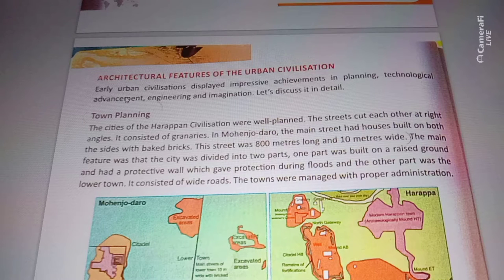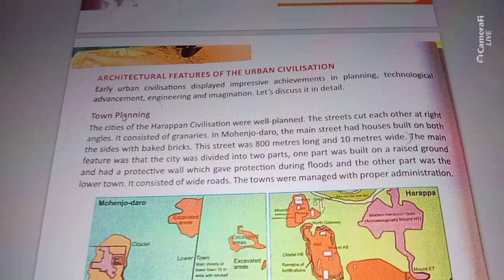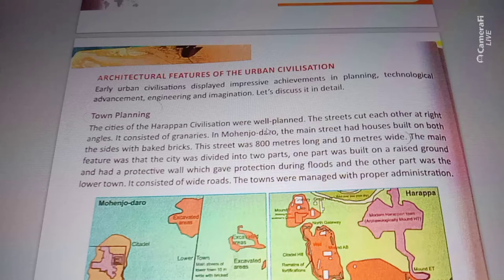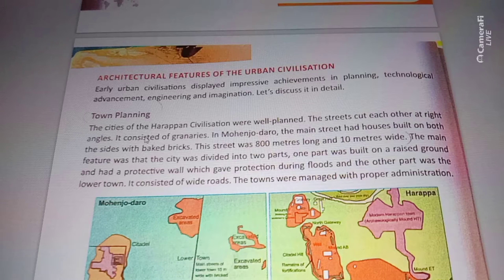Early urban civilization displayed impressive achievements in planning, technological advancement, and engineering. So what is town planning? In early cities, the Harappan civilization had well-planned cities. The streets cut each other at right angles, and the cities consisted of granaries.